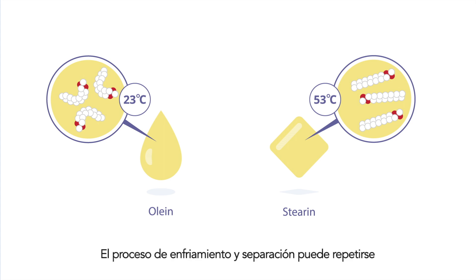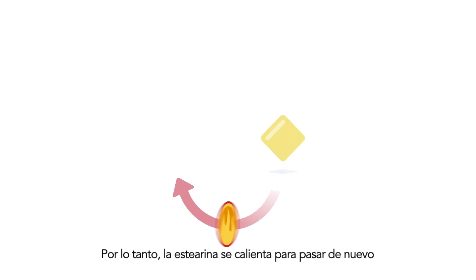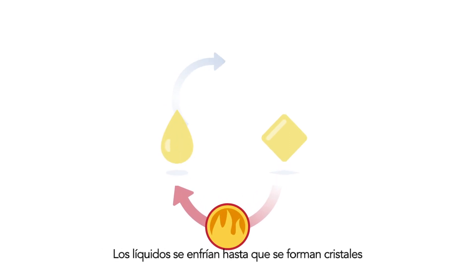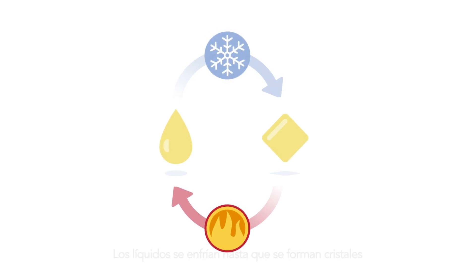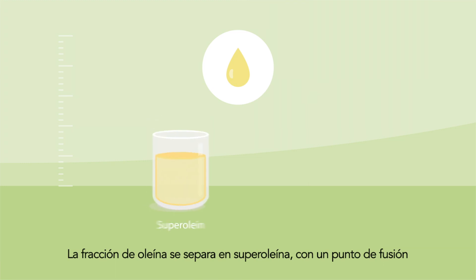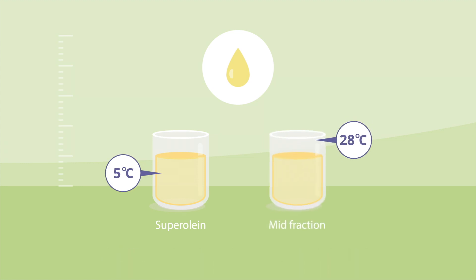The cooling and separation process can be repeated for the olein and stearin fractions. Therefore, the stearin is heated to become liquid again. The liquids are cooled until crystals are formed and subsequently separated by membrane filtration. The olein fraction is separated into superolein with a melting point of 5 degrees Celsius and a mid-fraction with a melting point of around 28 degrees Celsius.